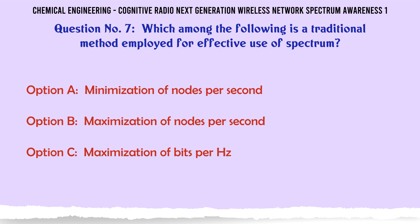Which among the following is a traditional method employed for effective use of spectrum? A. Minimization of nodes per second. B. Maximization of nodes per second. C. Maximization of bits per hertz. D. Minimization of bits per hertz.